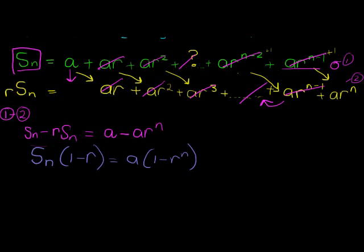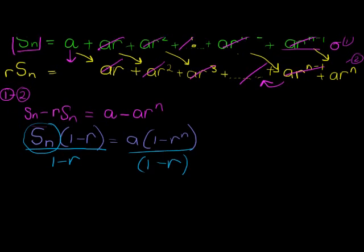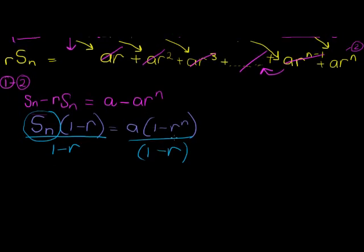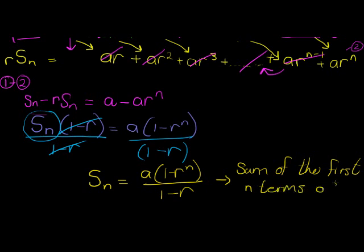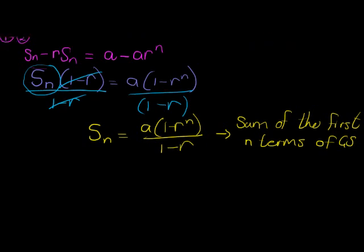Dividing both sides by (1 minus R) — note you cannot cancel that bracket with the other bracket, they are not the same value. So our lovely formula is: S_N equals A times (1 minus R^N) divided by (1 minus R). That is the formula for the sum of the first N terms of a geometric series.